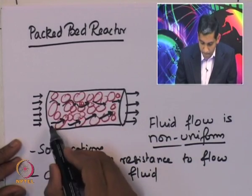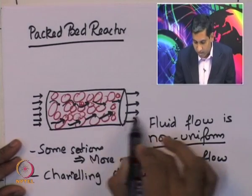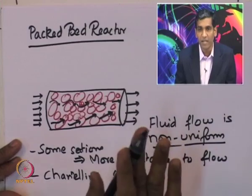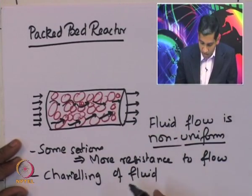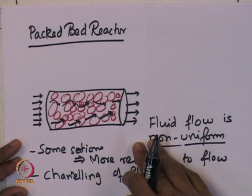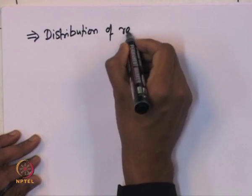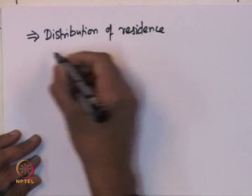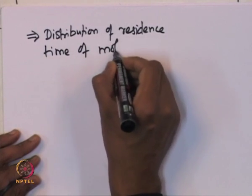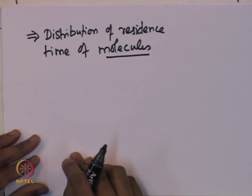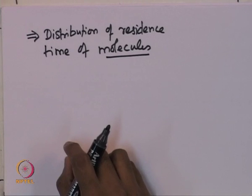Some sections can offer more resistance to flow, and as a result channeling of fluids occurs. As depicted, in some sections of the reactor the fluid quickly goes from inlet to exit while in other sections it spends much more time. Clearly, the amount of time spent by different molecules of the species entering the reactor is going to be different — there will be a distribution of residence time.